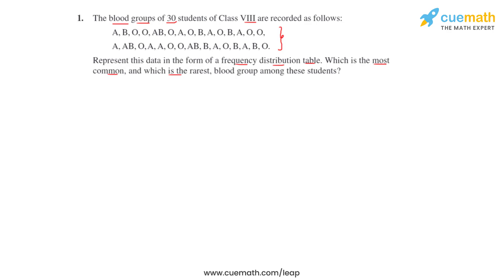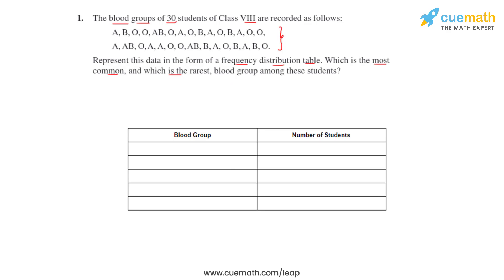So we will be drawing a tabular column first and list out the various types of blood groups that we see here. So we have blood group A, we have blood group B, we have blood group AB, and we have blood group O.